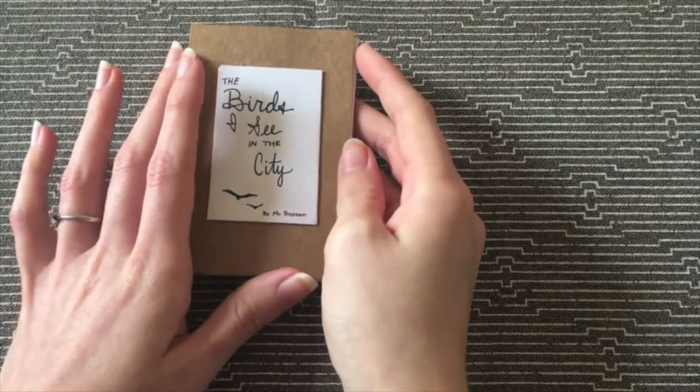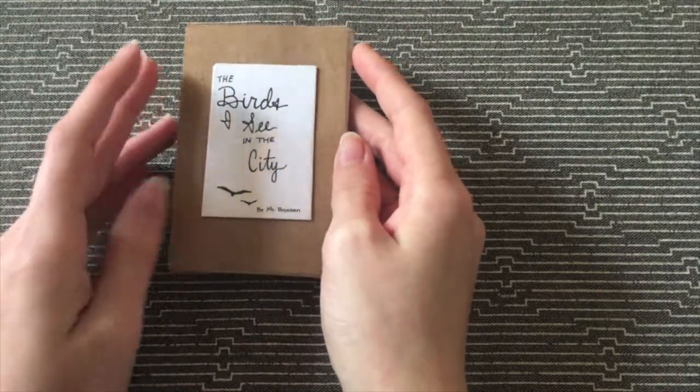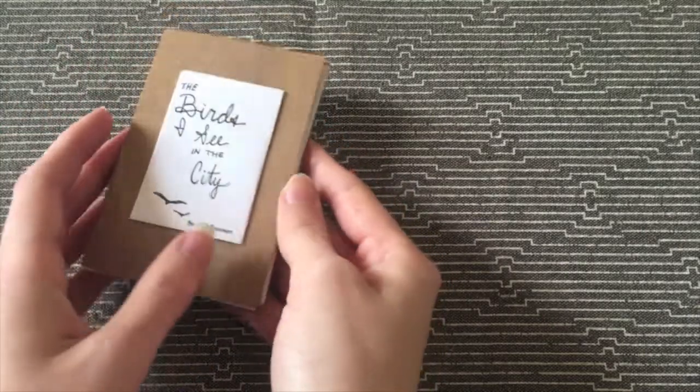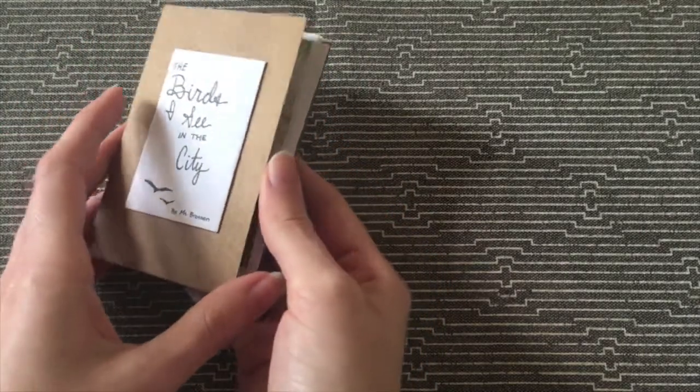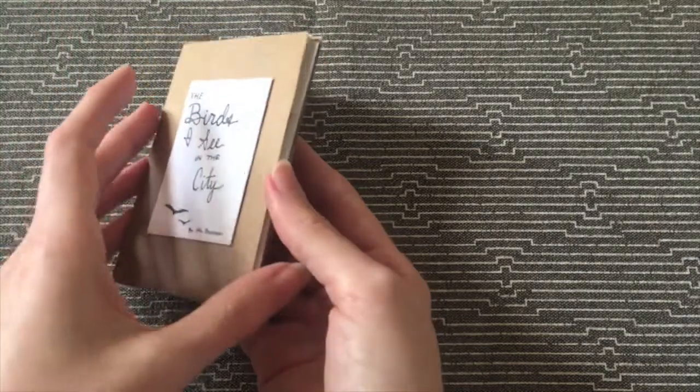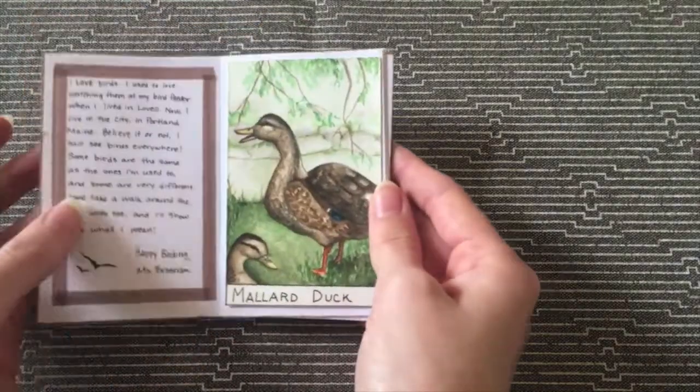Okay, so before we talk about the materials that we're going to use today, I just wanted to show you an example of what an art journal might look like. So this is one that I've been working on, and it's just a tiny little book. I made a front cover for it, and then on the inside, I have all these little pages.